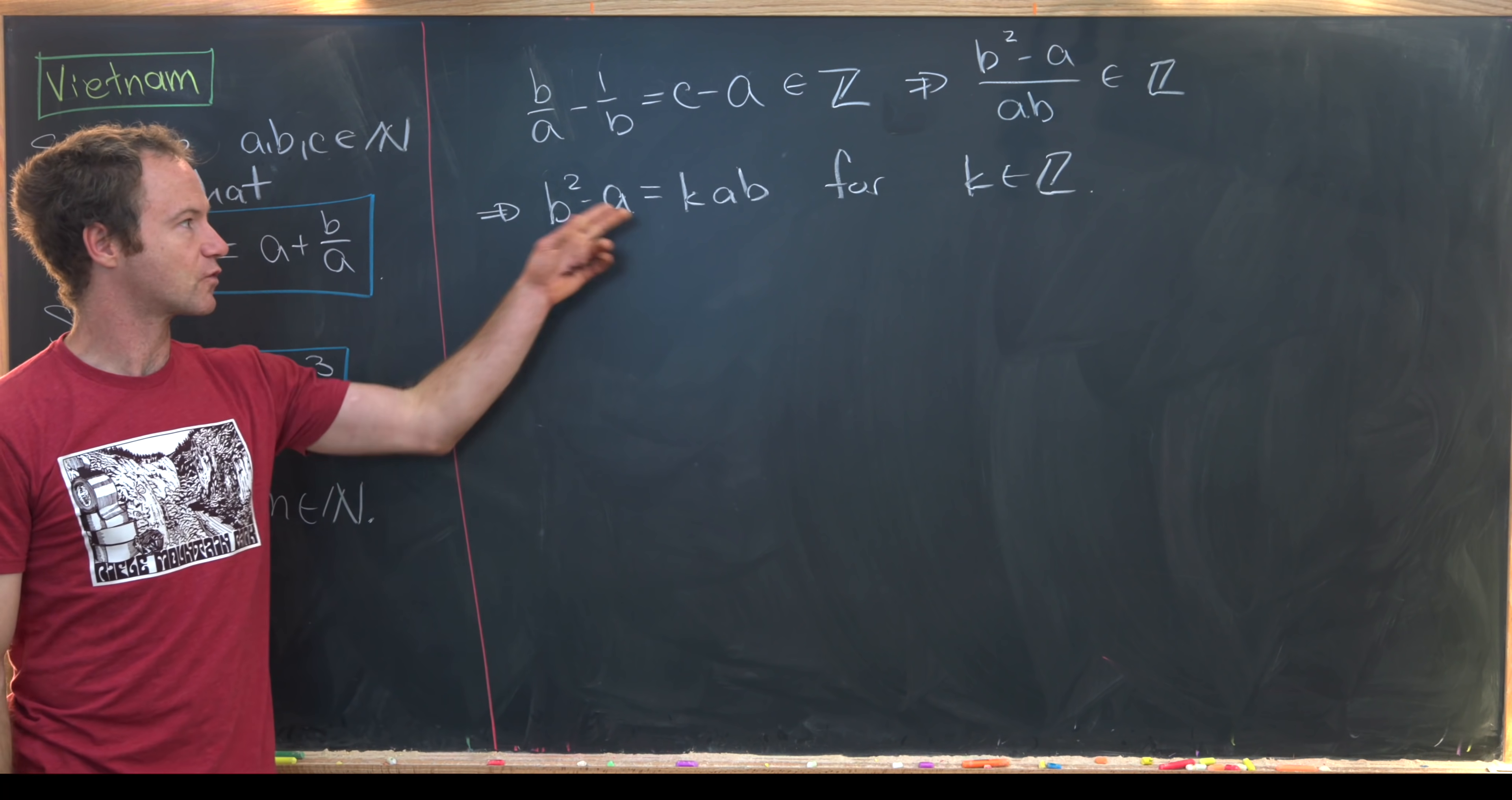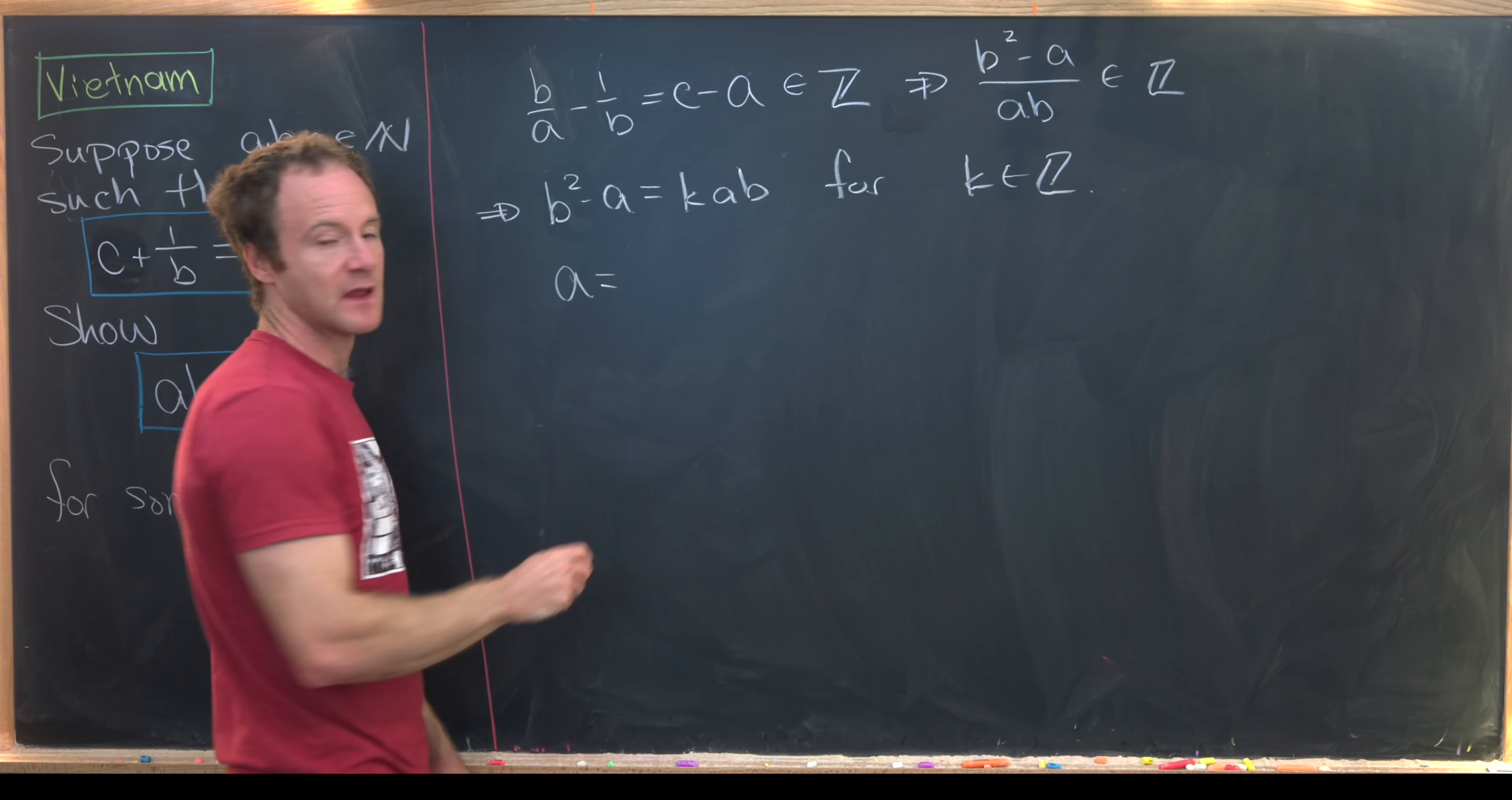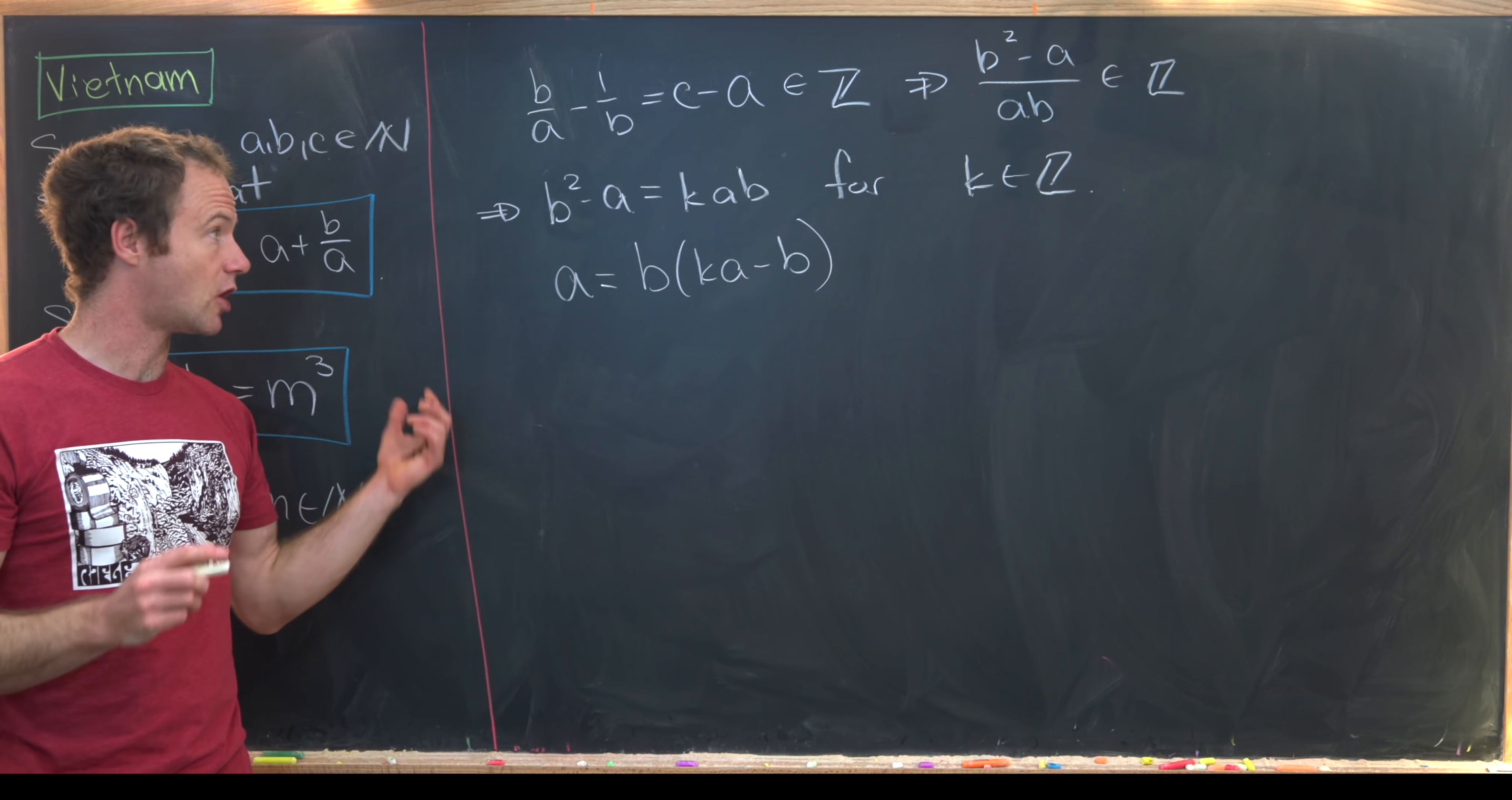Okay, and then we can rewrite this a couple of different ways. So notice we can start by rewriting this as A equals B times KA minus B. So that's just rewriting that thing a little bit, kind of solving for A.